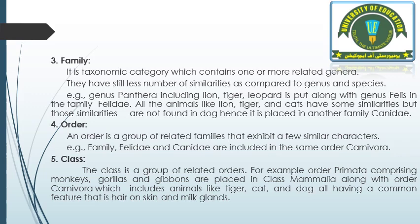Number four is order. An order is a group of related families that exhibit a few similar characters. For example, family Felidae and family Canidae are included in the same order Carnivora, because members of Felidae — lion, tiger, cats — eat meat, and members of Canidae, such as dog, also eat meat. That's why they are placed in one order, Carnivora.